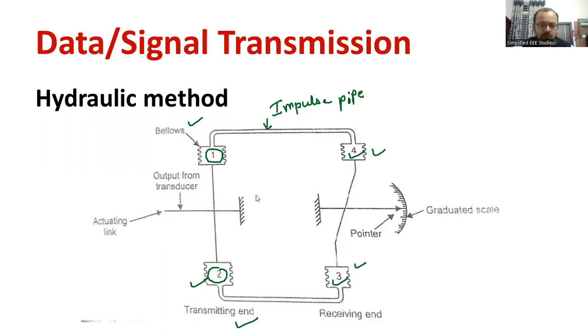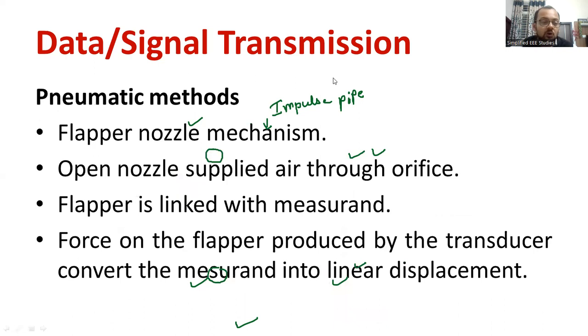You can observe at the transmitting end, we have data in the form of physical parameters. Whatever the physical parameters you are applying at the transmitting side, that will be reaching to the receiving end side through that particular impulse pipe. How the data will be transmitted? Data will be transmitted through that particular fluid or we can call it as a liquid. This is the method which is called mechanical method.